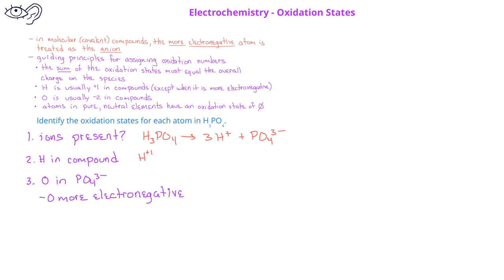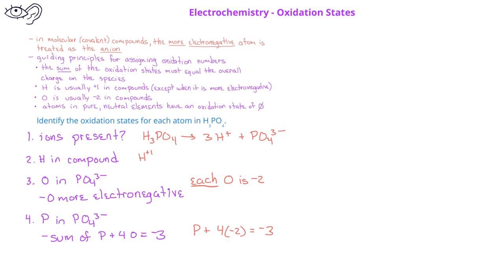We can use our guiding principle to recognize that oxygen in phosphate is more electronegative, and so the oxygen is going to be acting like the anion. We can assume that oxygen has an oxidation state of minus two. Since the phosphate overall has a charge of minus three, and we have four oxygen ions each with a charge of minus two, the phosphorus must have an oxidation state such that when added to the negative eight from the four oxygen ions, the result is minus three. Therefore, the oxidation state of phosphorus must be plus five. So the hydrogen has an oxidation state of plus one, phosphorus has an oxidation state of plus five, and each oxygen has an oxidation state of minus two.